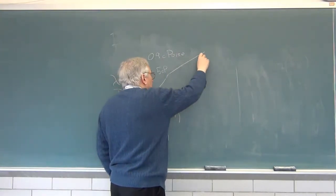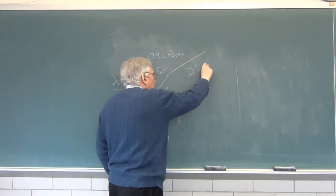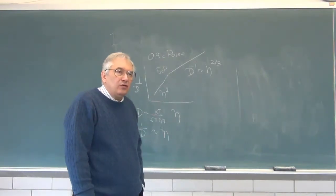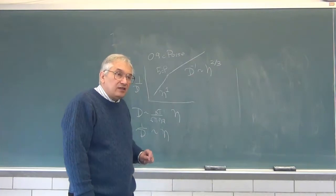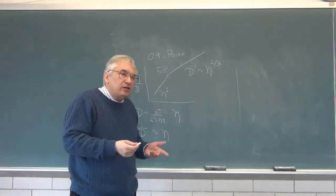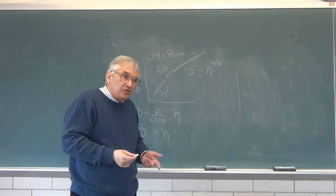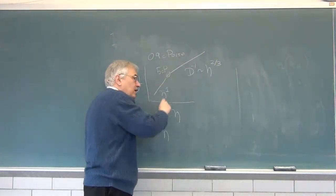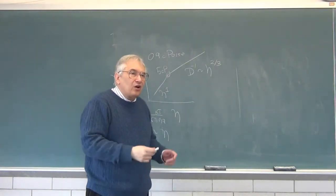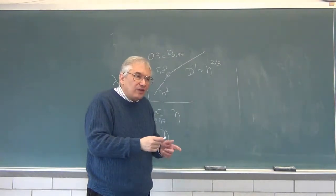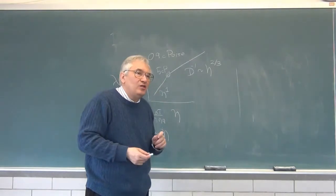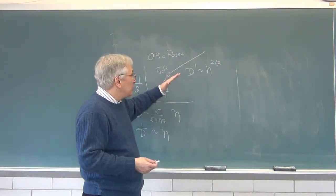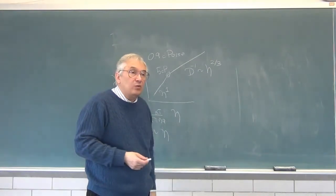And at higher viscosities, we find that d inverse is proportional to eta to about the two-thirds power. There have been an extensive series of papers, people who have studied this in different systems. The crossover location depends a bit on the molecular system, but the crossover behavior is the same. There's a strong dependence on viscosity, and then at larger viscosities, there's a much weaker viscosity dependence.